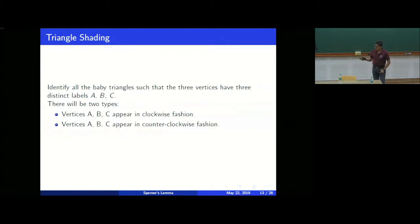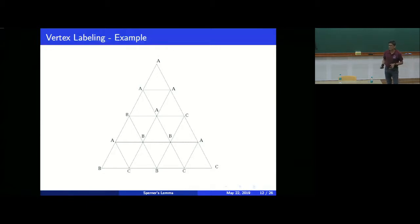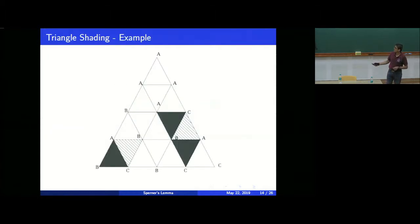After labeling, let's find all the smaller triangles — let's call them baby triangles. We find all baby triangles which have all three vertices A, B, and C. A triangle that does not have C will not qualify; one with all A, B, and C will qualify. We shade all baby triangles with vertices A, B, C in two different ways: if A, B, C appear clockwise, shade them one way; if counterclockwise, shade them another way.